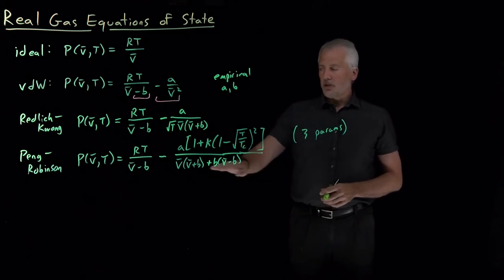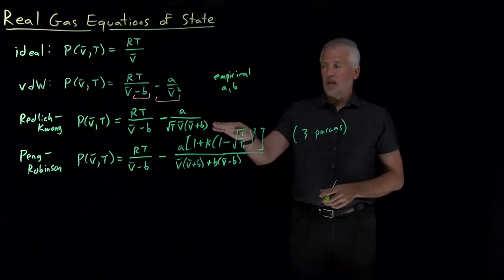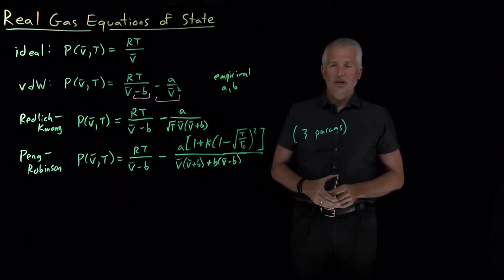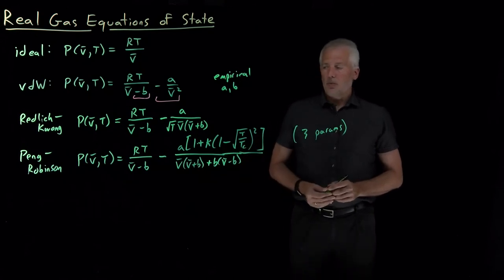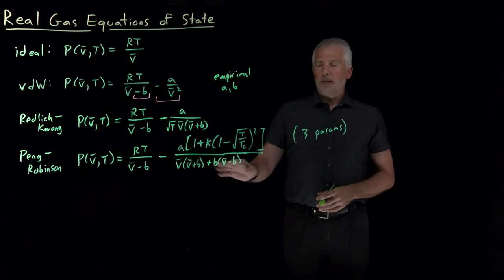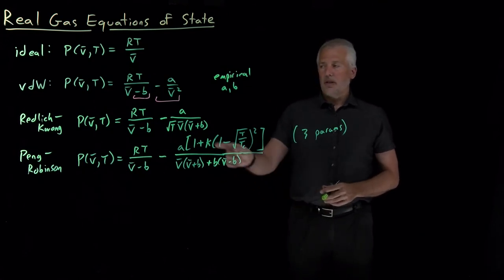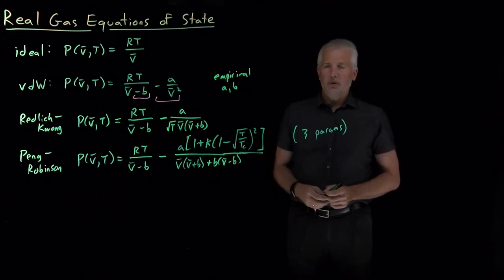Again, the goal is to make it more accurate. And indeed, it is more accurate than the Van der Waals equation and often more accurate than the Redlich-Kwong equation. So in the interest of having the equation be more accurate, we're willing to introduce more parameters, have those parameters be less connected to the physical meaning that they had when we first introduced them, and generally make the equation more complicated.